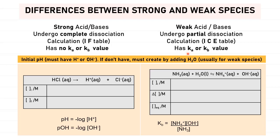In order to find K, you need to first have concentrations at equilibrium. For weak base examples, the Kb expression can be obtained. Note that water is not counted as it is in liquid state. When you have OH− concentration, you first find pOH. Then if the question asks for pH, simply use pKw = 14 minus pOH.